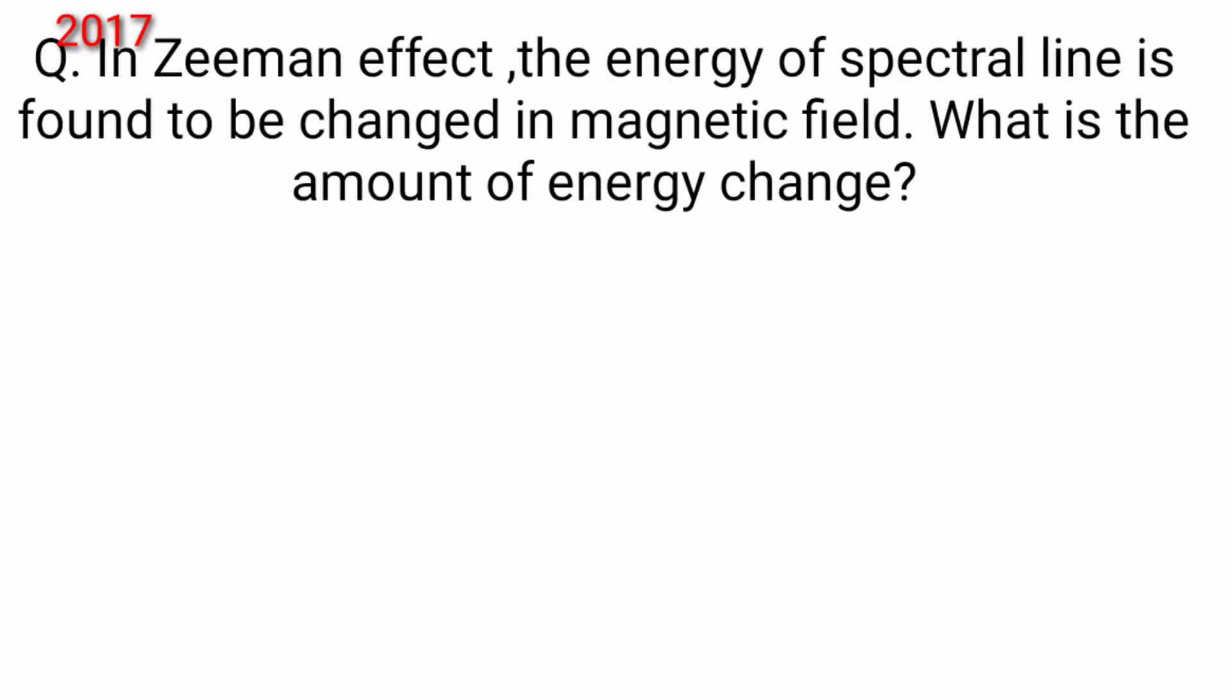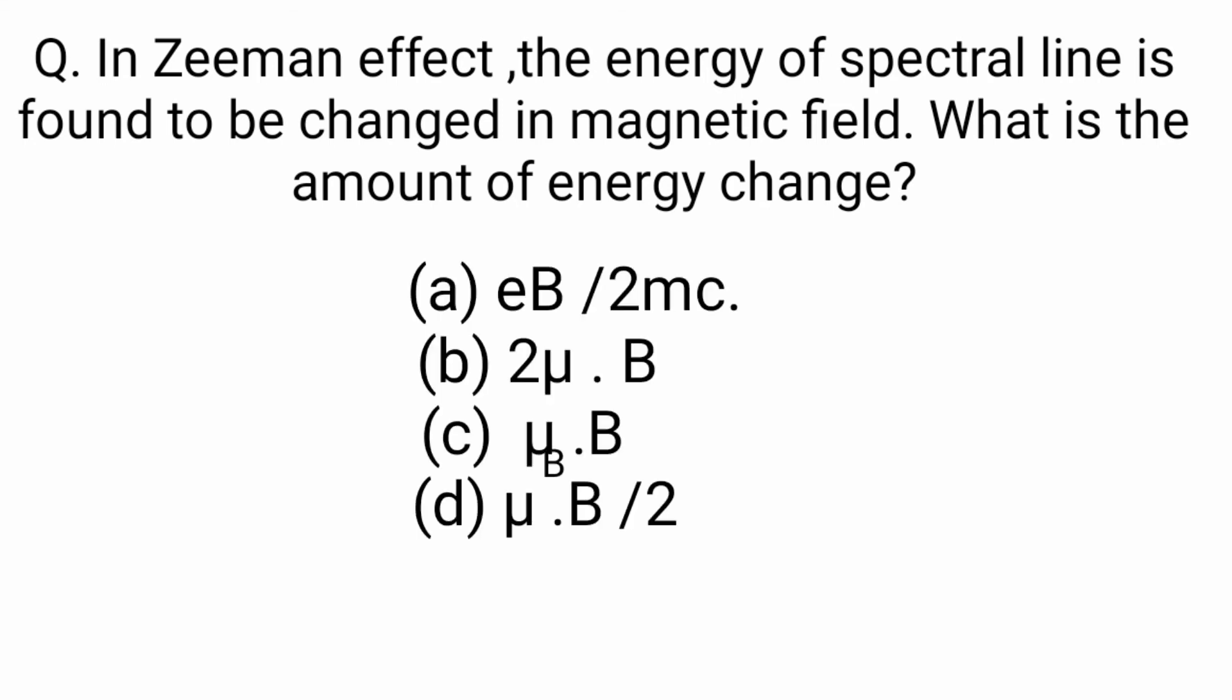We solved some MCQs. This MCQ was asked in the 2017 master cadre exam. In Zeeman effect, the energy of the spectral line is found to be changed in a magnetic field. What is the amount of energy change? Our right option is option c. Because we know that delta E we have mu B ml dot B. So here is the energy of the spectral line. So that will be mu B B. So option c.